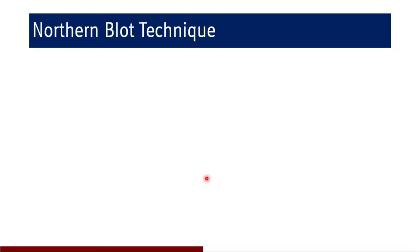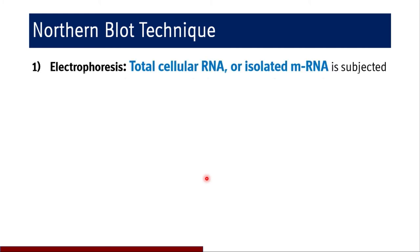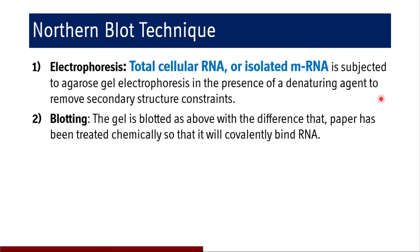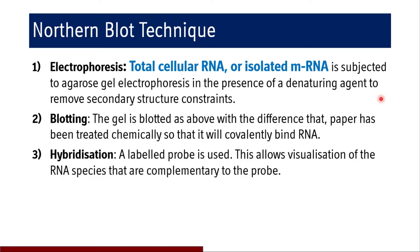The steps in northern blot technique are almost similar to southern blot — the only difference is it identifies RNA. Total cellular RNA or isolated mRNA is subjected to agarose gel electrophoresis in the presence of a denaturing agent to remove secondary structure constraints present in RNA and to remove impurities. After electrophoresis, blot transfer is employed, with the difference that the paper is chemically treated so that it will covalently bind RNA. Then a labeled probe is used for hybridization, allowing visualization of the RNA species complementary to the probe.